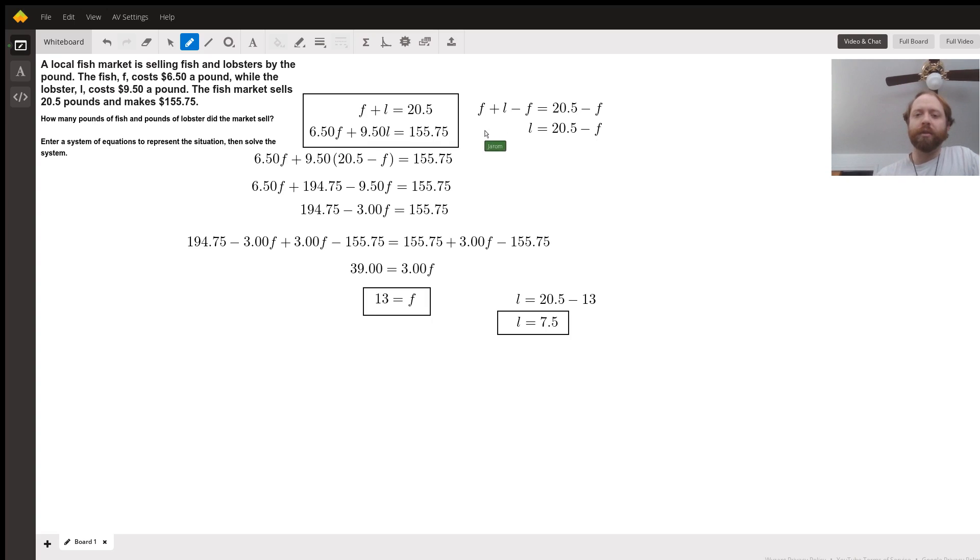We use that, substitute it into our second equation to get $6.50 times F plus $9.50 times 20.5 minus F equals $155.75.